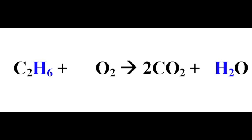The next atom along is hydrogen. In ethane there are six hydrogen atoms on the left. On the right hand side we have only two hydrogen atoms in a molecule of water — six on the left and two on the right. To balance the hydrogen atoms we add a three in front of the water molecule. Having three water molecules gives us six hydrogen atoms on the right, matching the six on the left. Hydrogen atoms are now balanced.